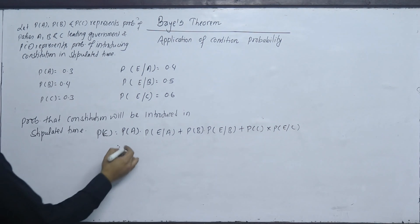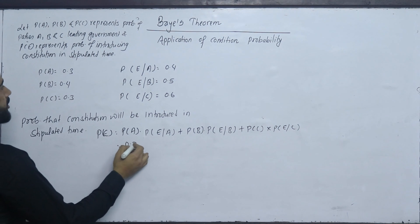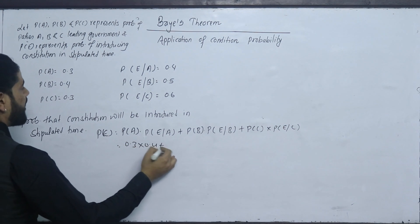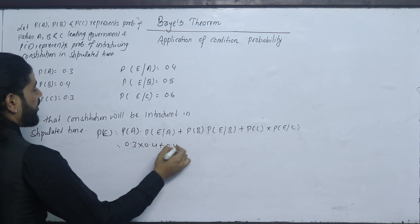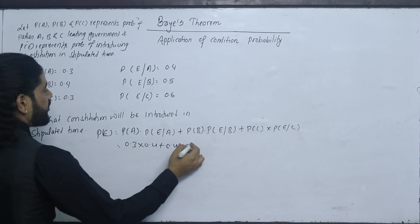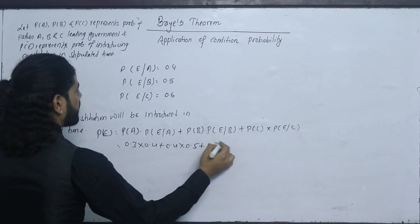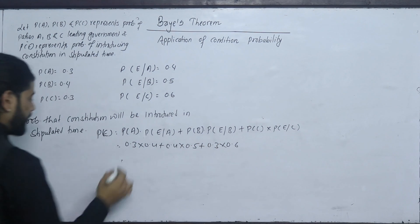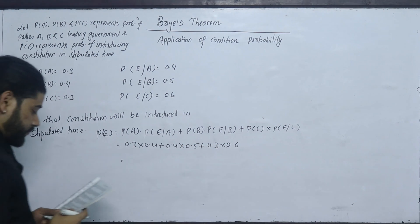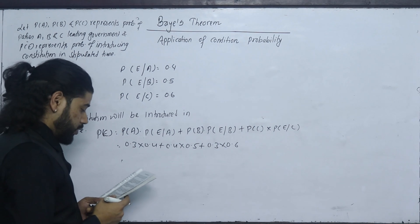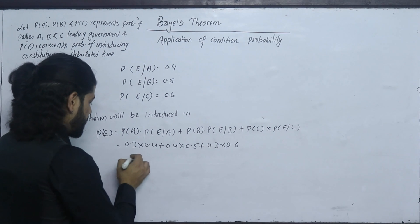The total probability is P(E) = 0.3×0.4 + 0.4×0.5 + 0.3×0.6.